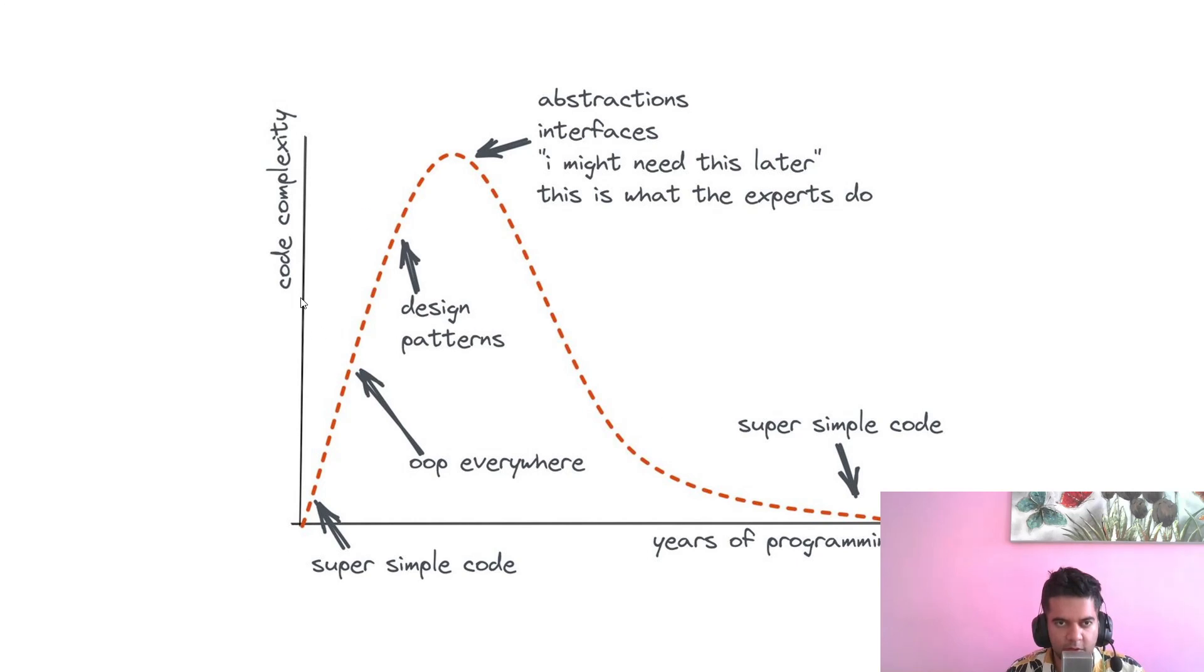Now there's a graph between code complexity and years of programming. So when you start out as a programmer, you start writing very simple code. And a lot of people who are on this journey, mostly people, are like two months, three months, six months, one year into learning the programming language.